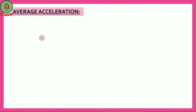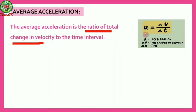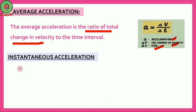Next is average acceleration. Average acceleration is the ratio of total change in velocity to the total time taken. The formula is: average acceleration = Δv / Δt, where Δv is the change in velocity and Δt is the time interval.